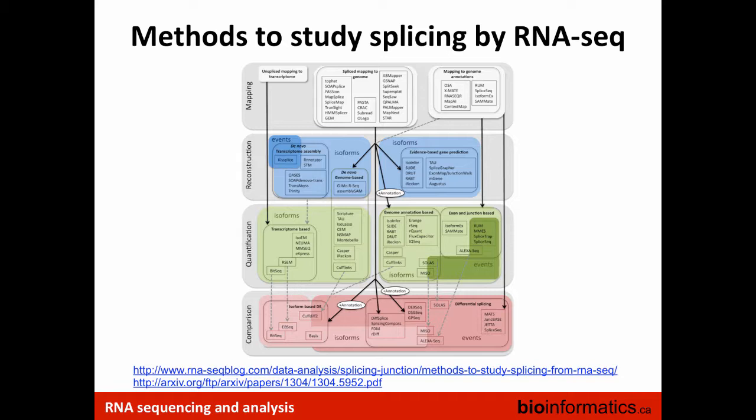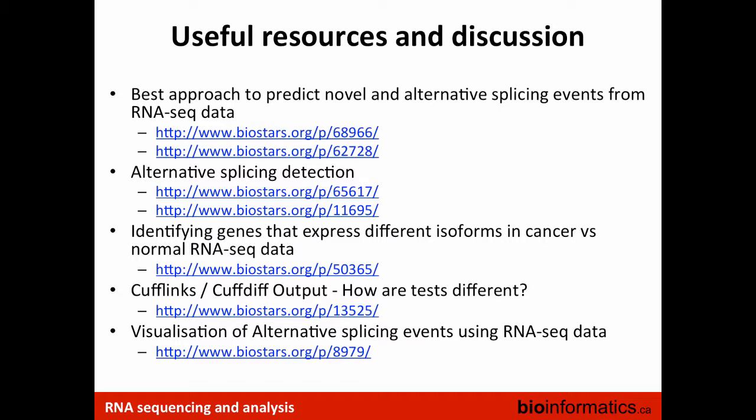I'm referencing a specific paper — published in the archive but possibly published elsewhere now — that provides a table focused on all the different tools and methods published so far relating to alternative expression and alternative splicing analysis using RNA-seq data. There are also some Biostar posts that have started to answer high-level questions about how to detect alternative splicing, identify differential alternative splicing, understand cufflinks and cuffdiff output as it relates to alternative splicing, and how to visualize alternative splicing.